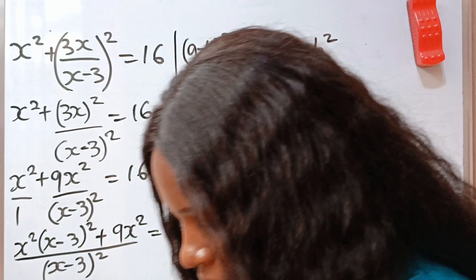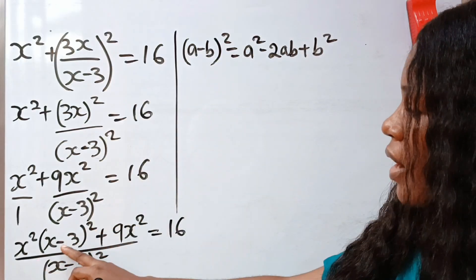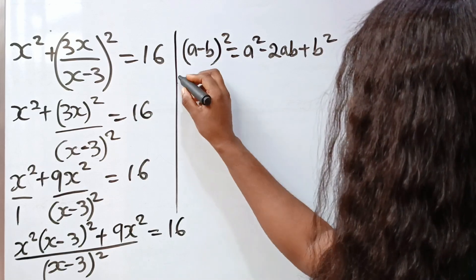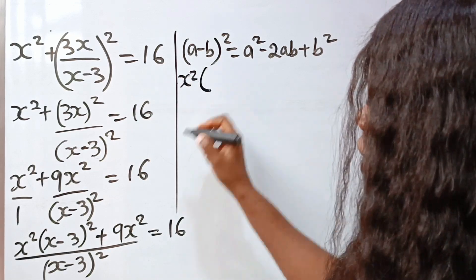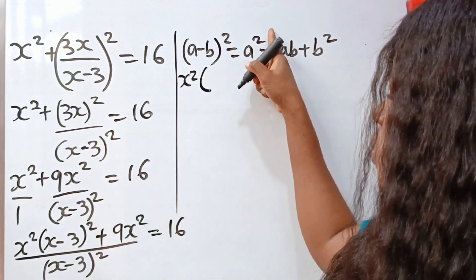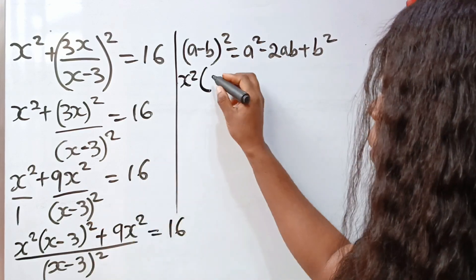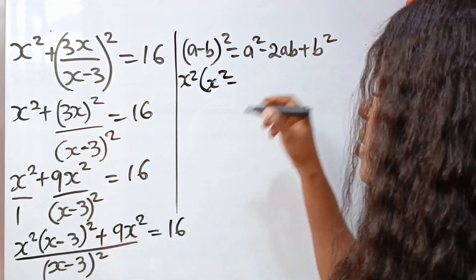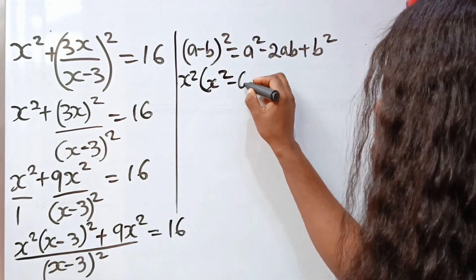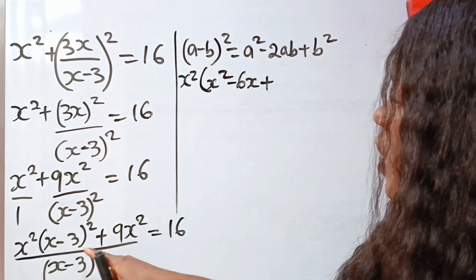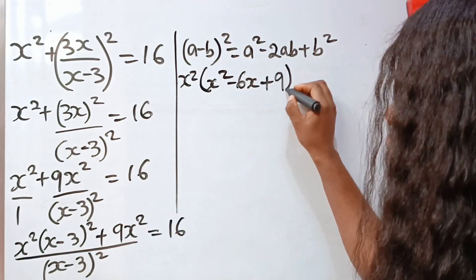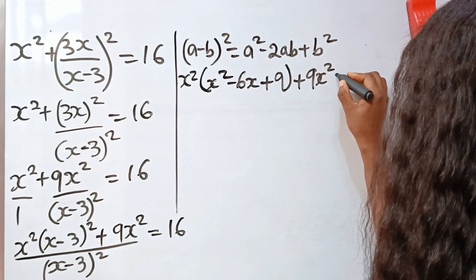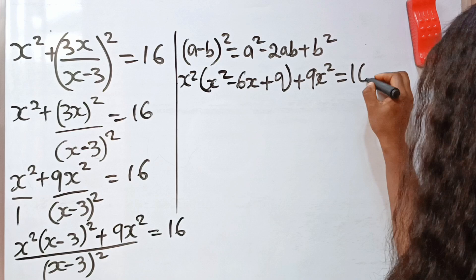Now when you open these brackets, we are going to have x squared bracket: x squared — that is A squared, that is x squared — minus 2AB, which is 2 times x times 3, giving 6x, plus B squared which is 3 squared, giving 9. Then plus 9x squared, all equal to 16.